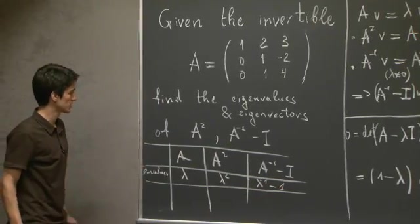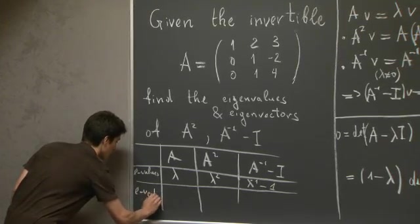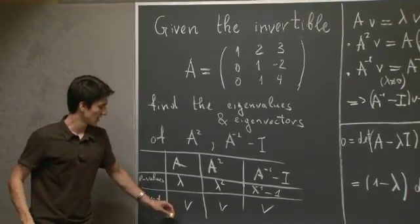And lambda inverse minus 1 will be the eigenvalue for A inverse minus the identity. And the eigenvectors will be the same. We're done.